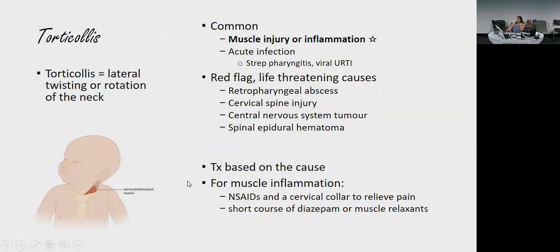Torticollis is the twisting of the head, mainly involving the sternocleidomastoid muscle and sometimes the trapezius. The most common cause in kids is muscle injury or inflammation, most likely related to a viral condition or acute upper respiratory tract infection. Life-threatening causes include retropharyngeal abscess, nerve injuries, and tumours causing muscle contraction. For muscle inflammation, treatment is simple analgesia and either a soft or hard cervical collar. If really serious and not responding, you can use muscle relaxants or diazepam.